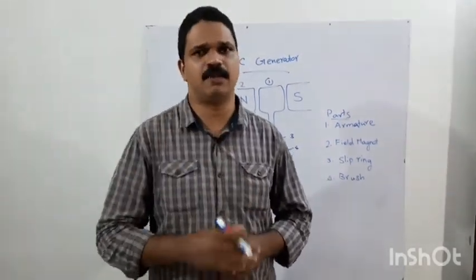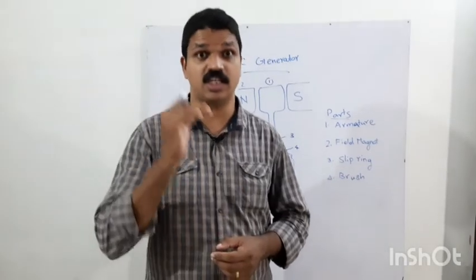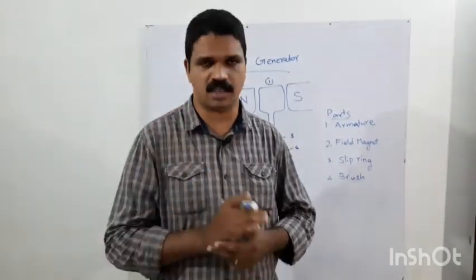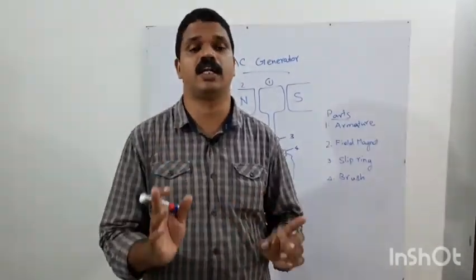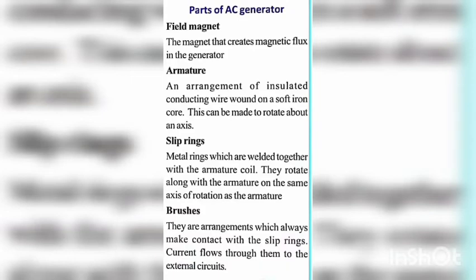The first main part is the magnet, second one is armature, third one is slip ring, and fourth one is brush. These are the main parts of the AC generator, and we will describe each one as well as we can.